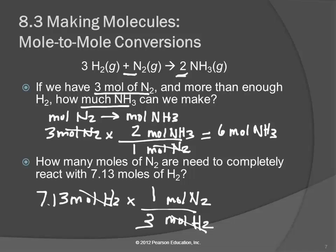So 7.13 divided by 3. So how many significant figures should my answer have? Three. 2.38 moles of nitrogen.